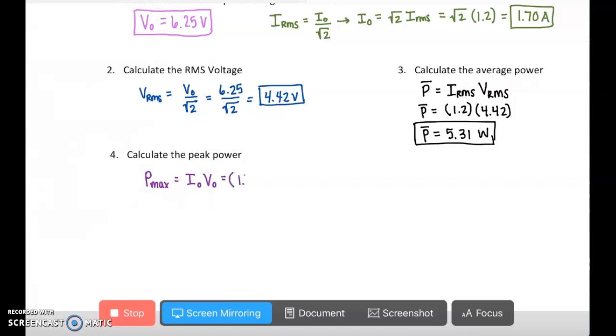My peak current from number 1 was 1.70. My peak voltage also from number 1, read off the graph, was 6.25. And that should come out to be about 10.625 watts.